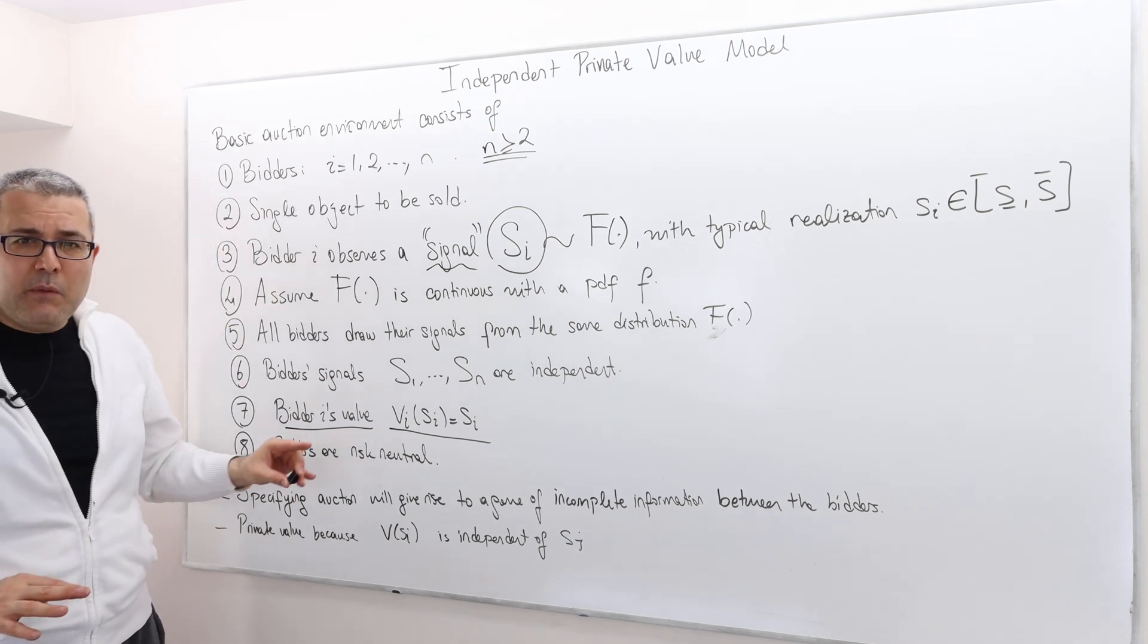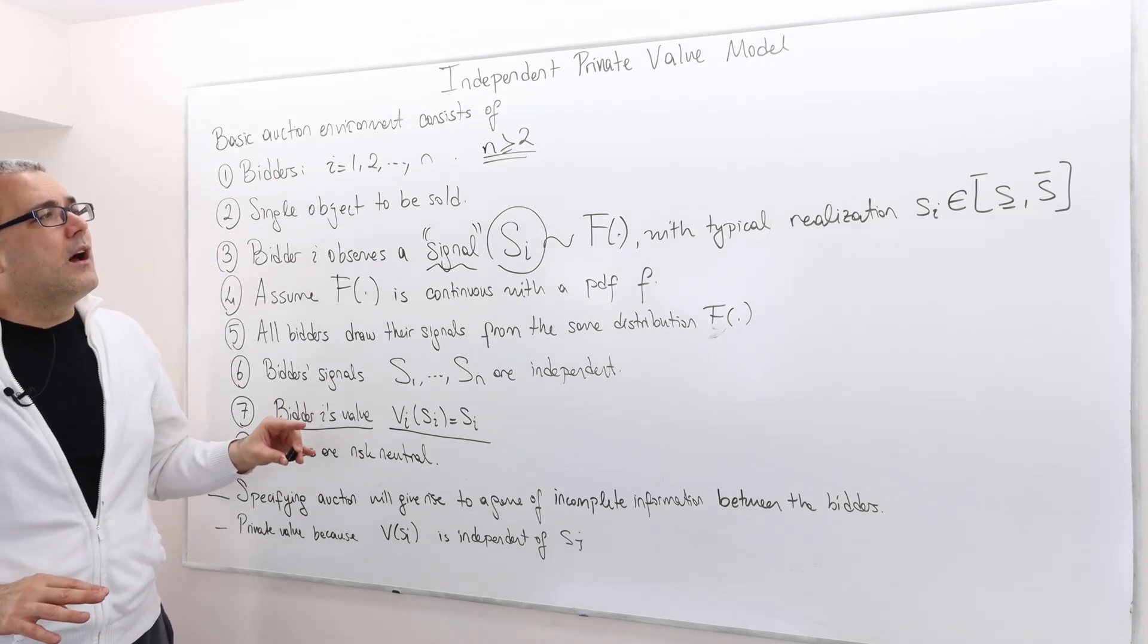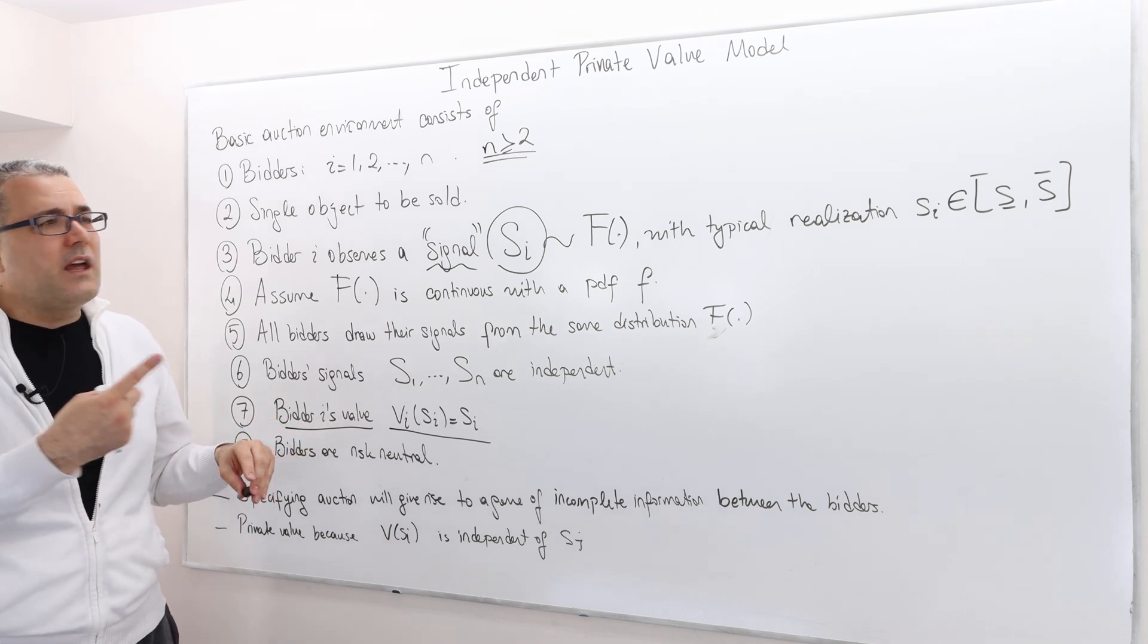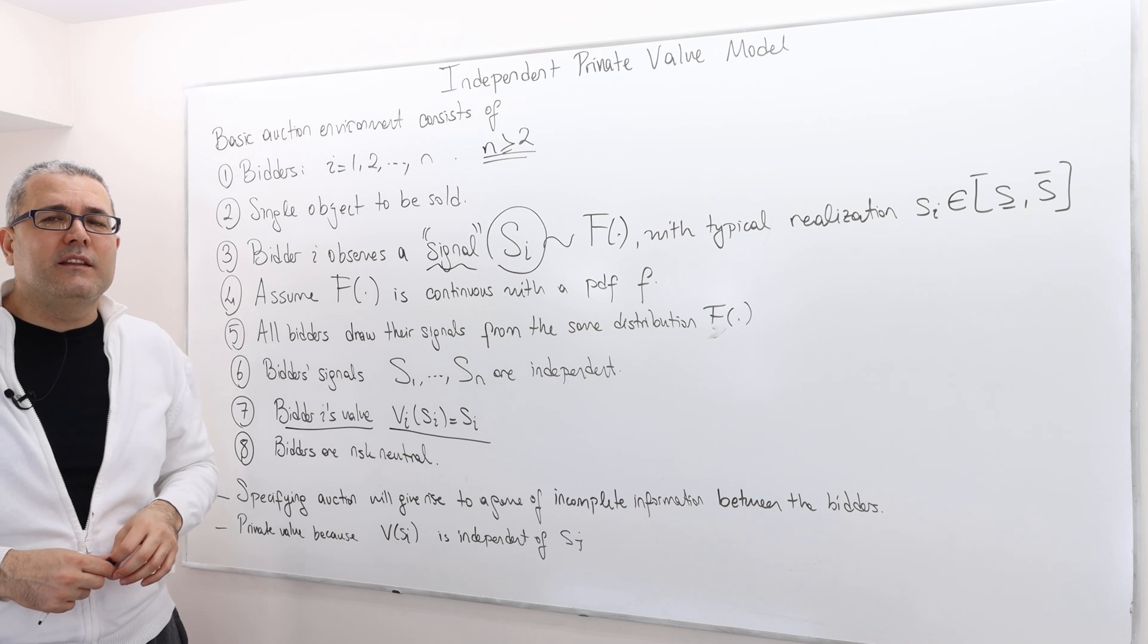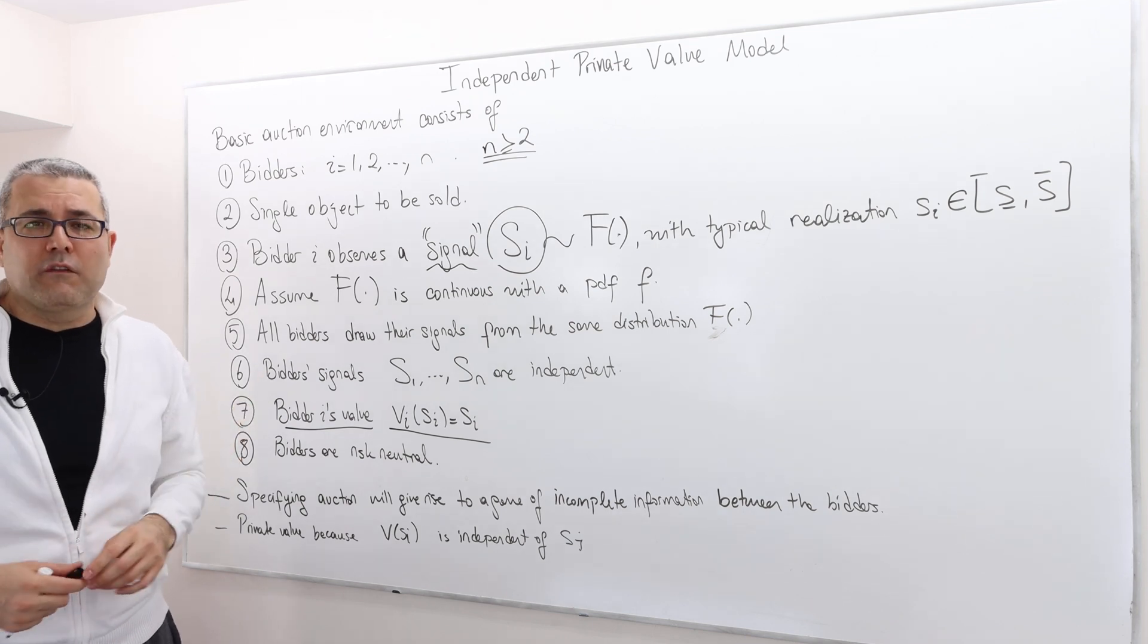So that's the model we're going to stick with for the rest of this chapter. And then in the next episode, I'm going to talk about second price auction and explain how we solve it.